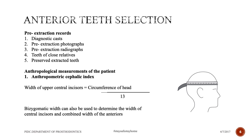When no diagnostic casts, photographs, or radiographs are available, you can use teeth of close relatives — for example, a son or daughter of an older patient. Any preserved extracted teeth can also be used to determine the size.